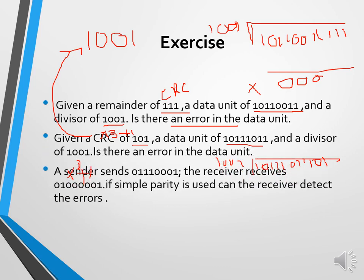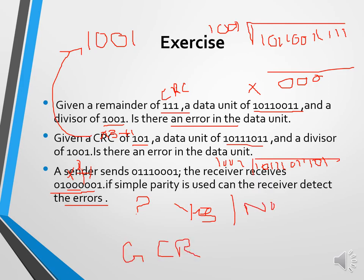Another exercise: the sender sends 01110001, and the receiver receives a different pattern. Looking at the data, two bits have changed. If simple parity is used, can the receiver detect the error? Consider whether yes or no, and justify your answer. Upload your answer on Google Classroom along with all other exercise question solutions.